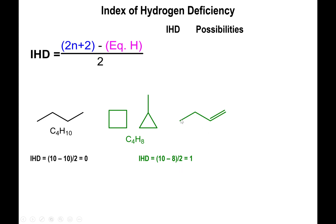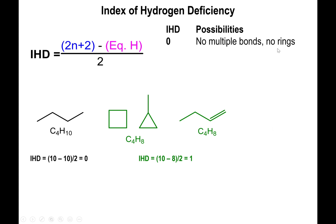Similarly, an alkene like 1-butene also has only eight hydrogens, so the IHD of the alkene is also equal to 1. What the IHD is telling us in essence are the possibilities for structural features. If the IHD is zero, your molecule contains no multiple bonds and no rings.